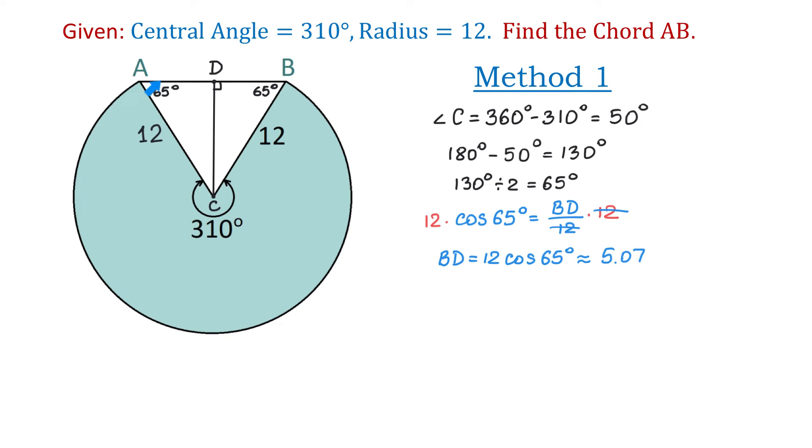And now because BD is equal to AD, then to find AB we will multiply 5.07 by 2. Then AB equals 5.07 multiplied by 2 which is 10.14. So we found the chord AB and it is 10.14 units.